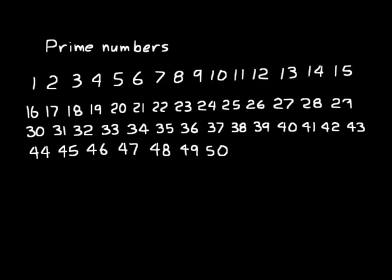Let's look at the second part of this lesson on prime numbers. A prime number is a number that has exactly 2 different factors. For example, with this list of numbers from 1 to 50: 1 is not a prime number because the only thing that 1 can be multiplied by is itself, so that's only one factor. A prime number must have 2 different factors — not 1, not 3 or more, exactly 2.